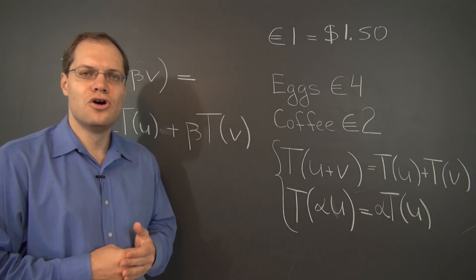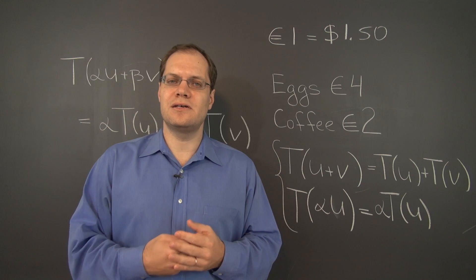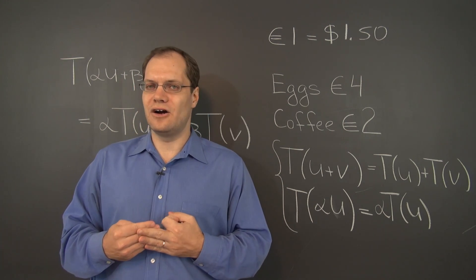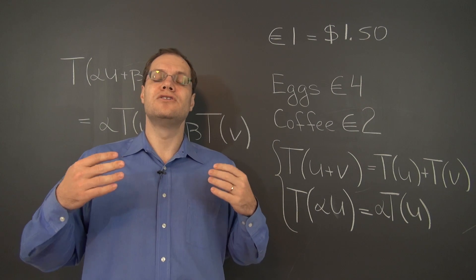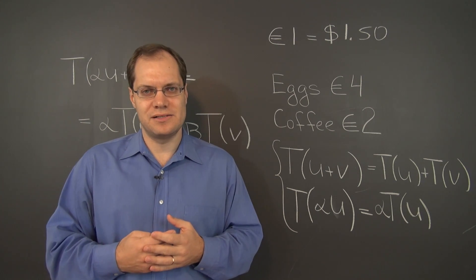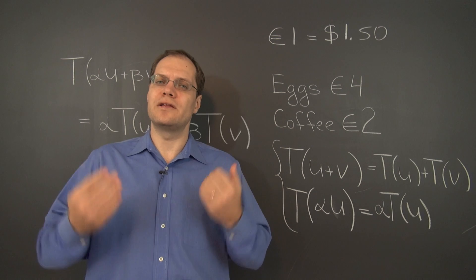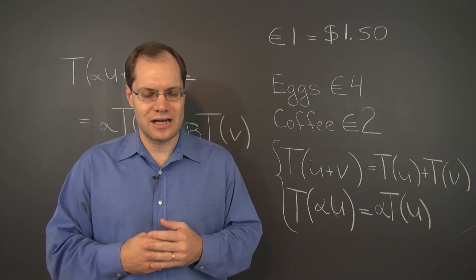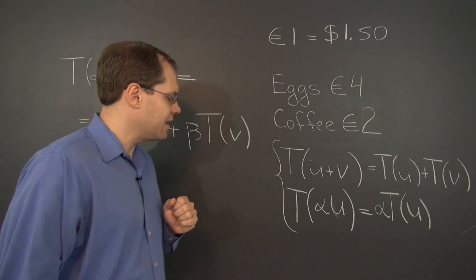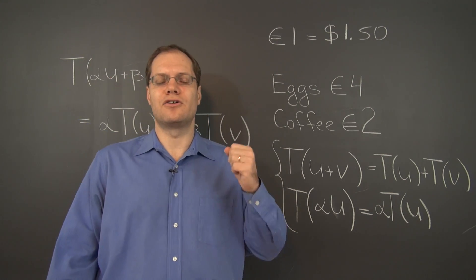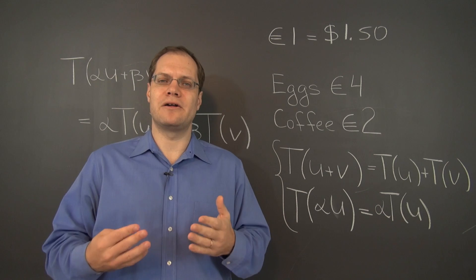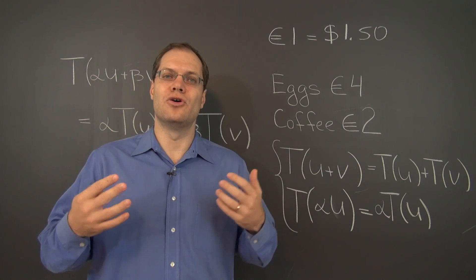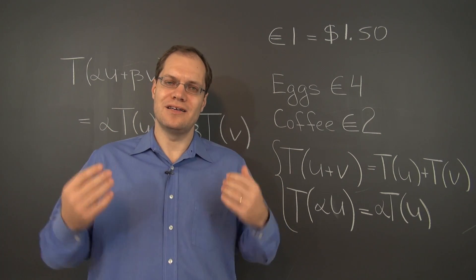So we will now march through our three favorite spaces — geometric vectors, polynomials or functions, and then finally R^N — and we will consider transformations in each one of these spaces, and we will decide whether or not they are linear. We will introduce another very important concept along the way, and we will do it in each case on their own terms. So that motto of treating all objects on their own terms is now back in full force.